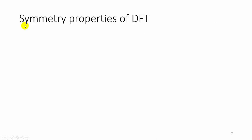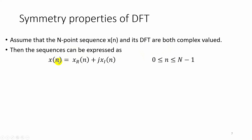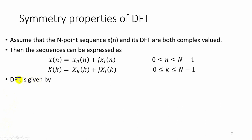Till now we have learned about circular symmetries of a sequence. Now we will learn about symmetric properties of DFT. Assume the N-point sequence x of n and its DFT X of k are both complex valued. The sequence can be represented as x of n equal to xr of n plus j times xi of n, where xr is the real part and xi is the imaginary part. Similarly its DFT is given by X of k equal to Xr of k plus j times Xi of k. For the sequence x of n, the DFT is given by X of k equal to the summation from n equal to 0 to N minus 1 of x of n times e to the power minus j 2 pi k n by N.